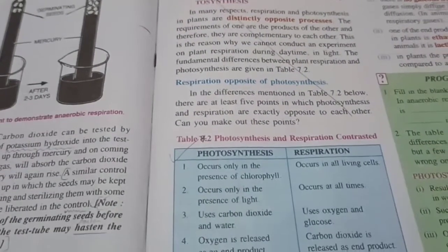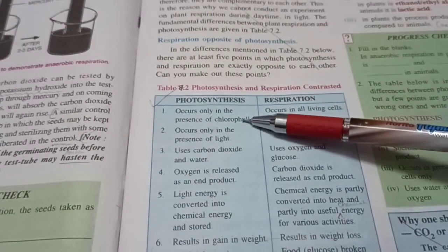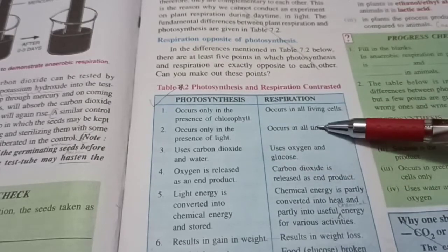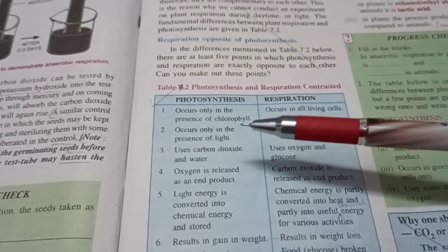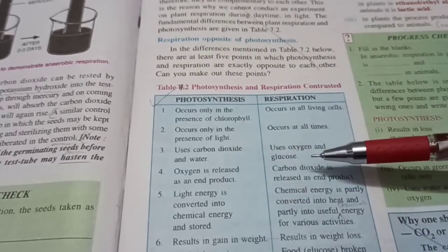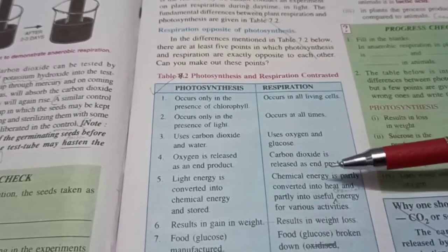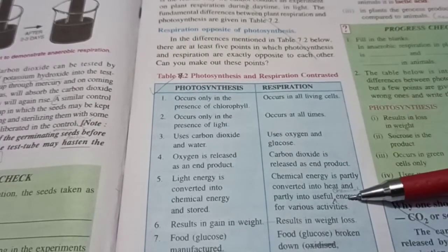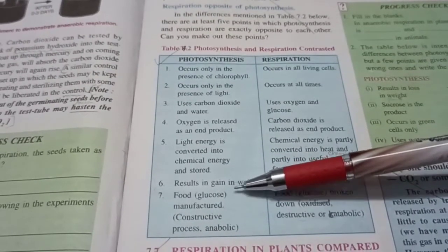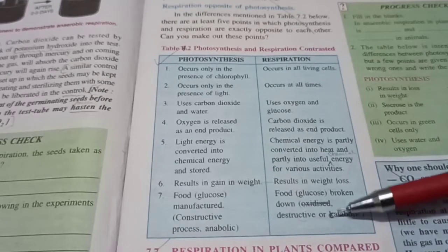Next let's understand the difference between photosynthesis and respiration. This happens only in the presence of chlorophyll this can happen in all living cells in the presence of light can occur at all times during day and night both uses CO2 and water uses oxygen and glucose oxygen is the end product and CO2 is the end product light energy is converted into chemical energy and chemical into heat and chemical energy. Gain in weight so it's an anabolic process constructive process results in weight loss so it's a catabolic process destructive process.